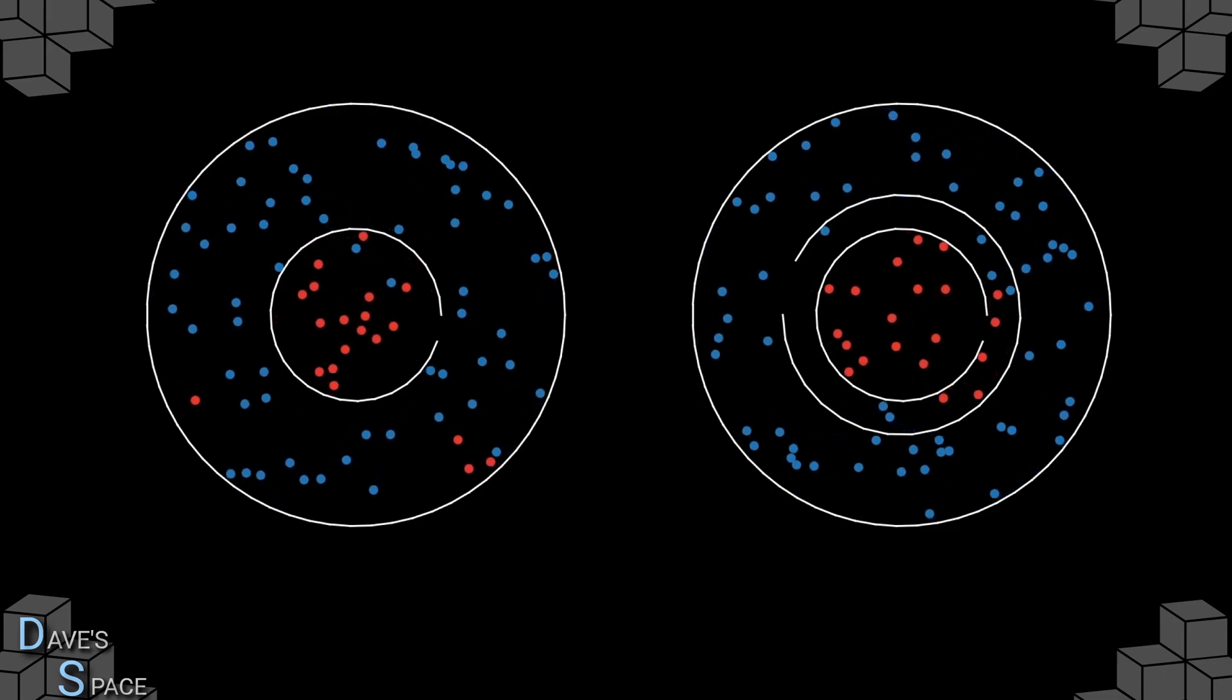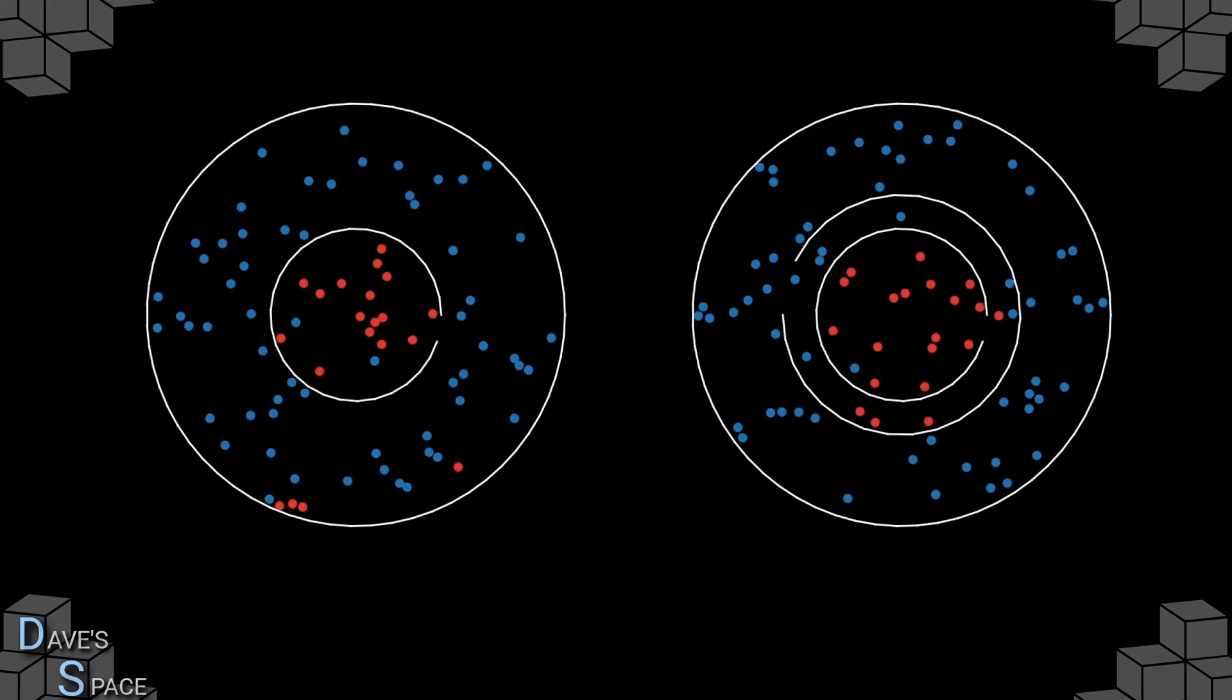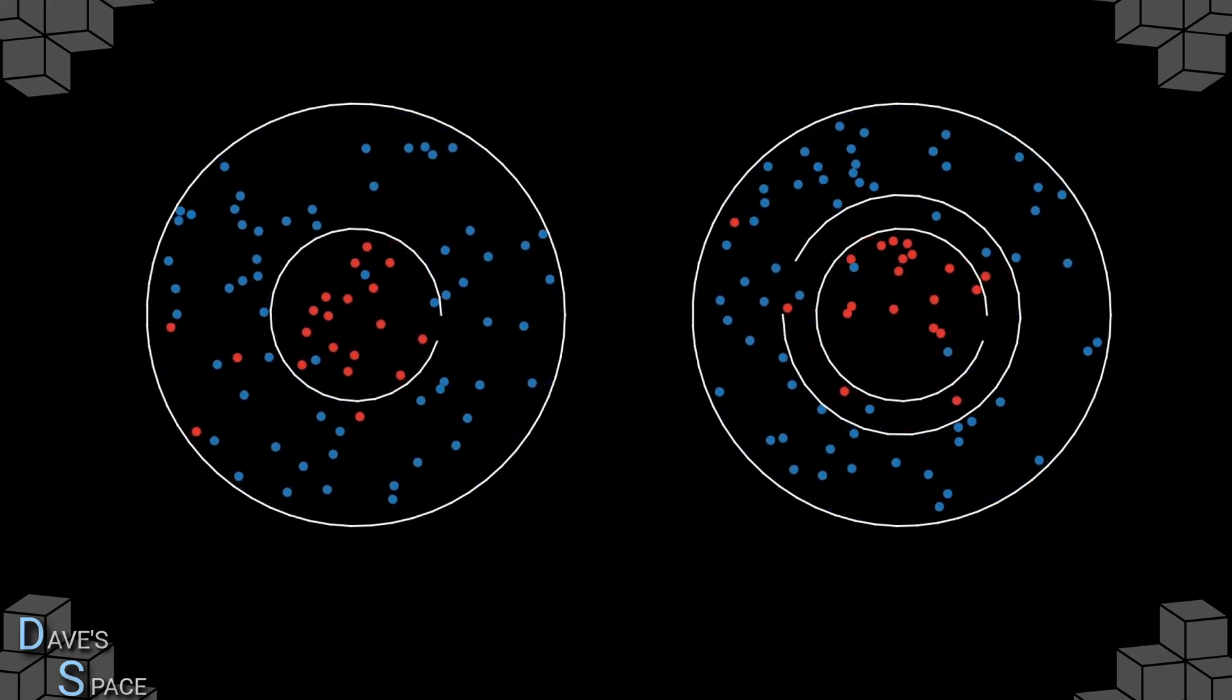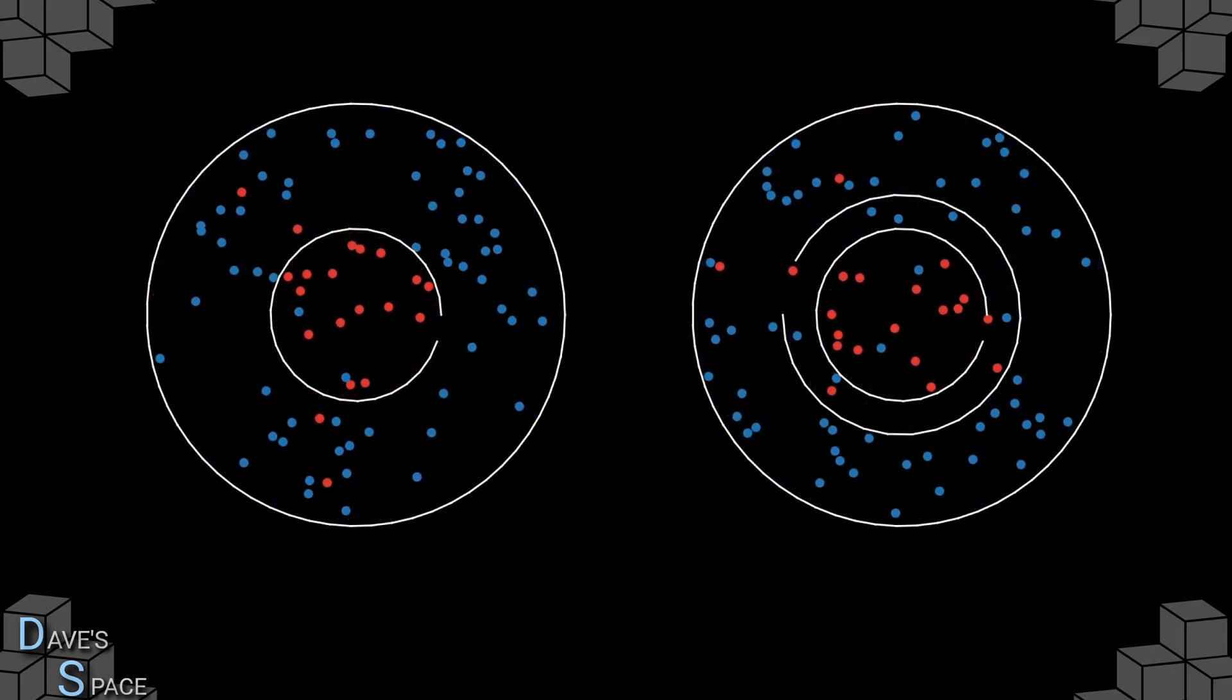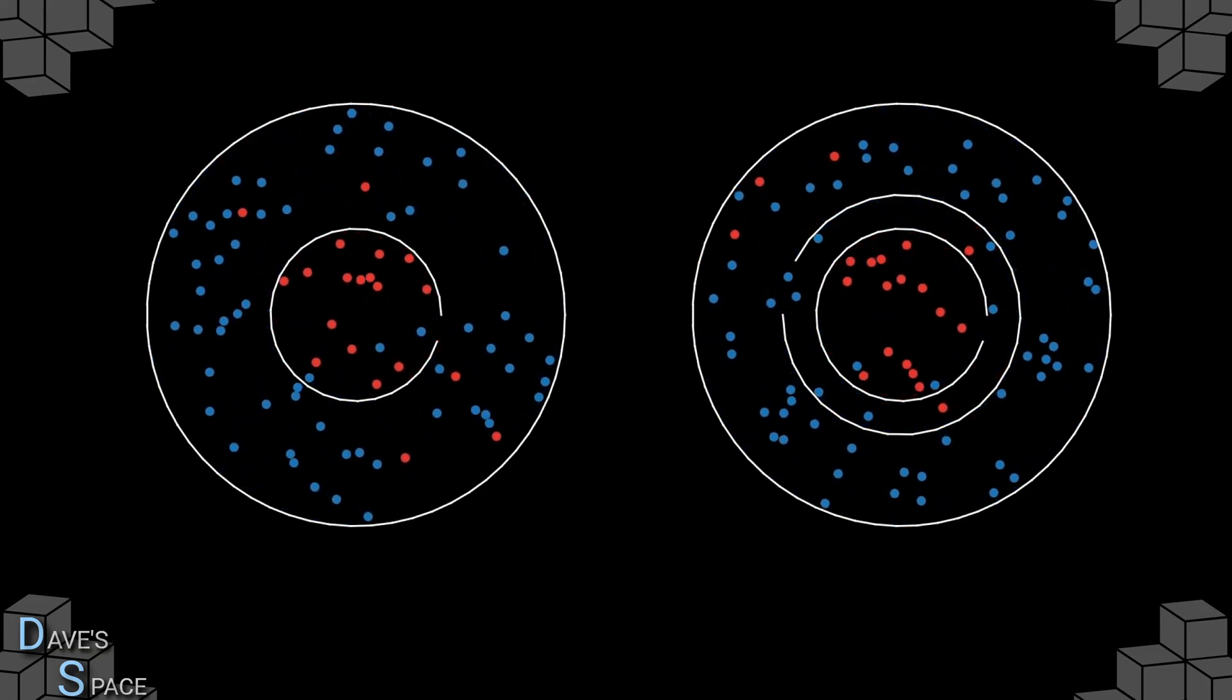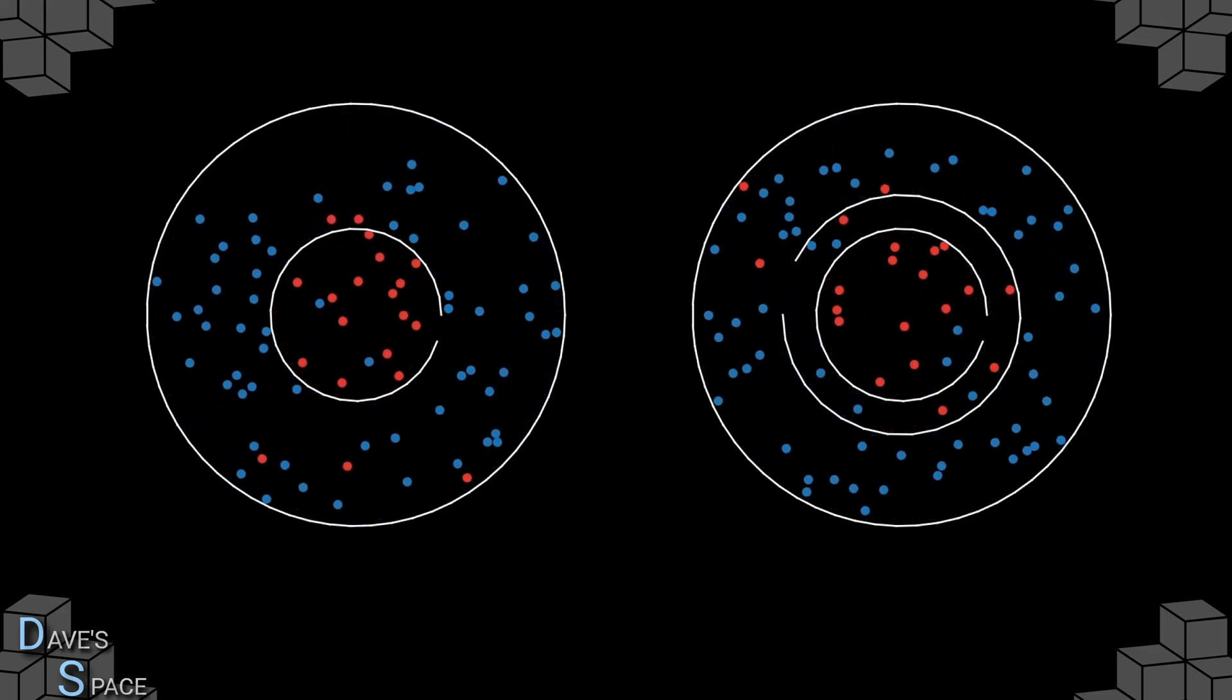Likewise, the blue particles also must travel this more restrictive path, and so it takes them longer to equilibrate from the outside to the inside also. And this situation is quite common in real life. A standard takeaway box, for example, is not completely airtight, but it does create enough of a tortuous path with such a small restriction that any smells inside take a long time to diffuse through these small gaps.